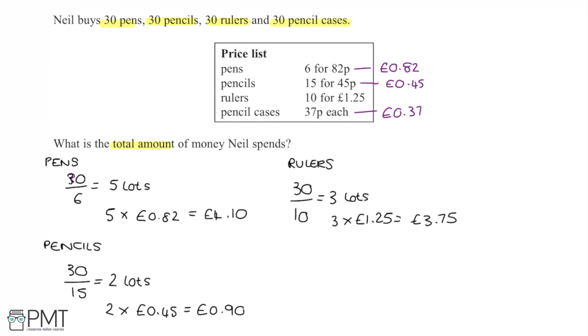And then finally here, I just have to work with pencil cases. Now pencil cases are 37 pence each, and if I want 30 of these, I just take my 30 and then multiply it by the cost for 1 which is 37 pence. And that gives me an answer of £11.10 here.